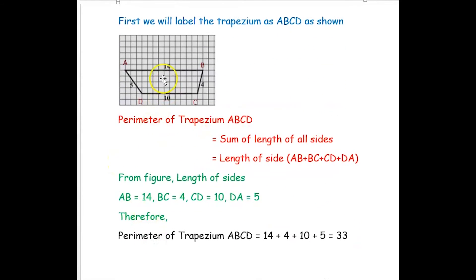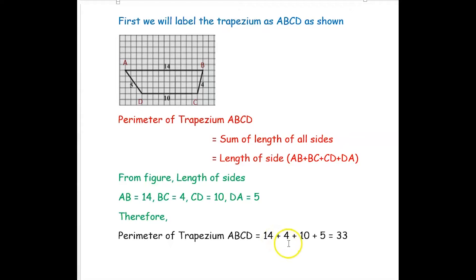From the figure, the length of side AB is 14, BC is 4, CD is 10, and DA is 5. Therefore, the perimeter of trapezium ABCD is 14 plus 4 plus 10 plus 5, which is equal to 33. So, the perimeter of the first trapezium is 33.